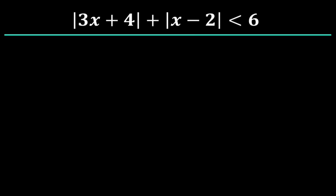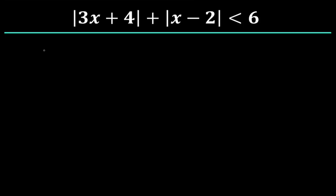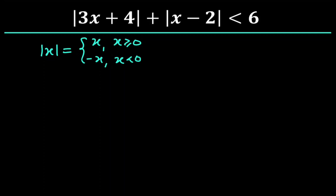To start with, let's recall the definition of the absolute value of x. We know that the absolute value of x is equal to x if x is greater than or equal to zero, or negative x if x is less than zero. Similarly, the absolute value of 3x plus 4 is equal to: